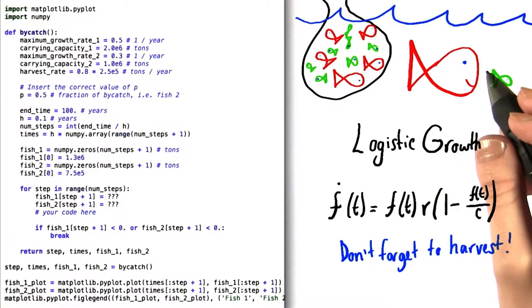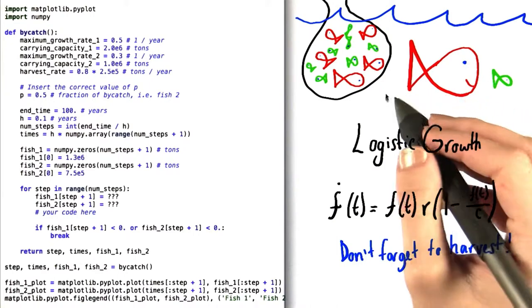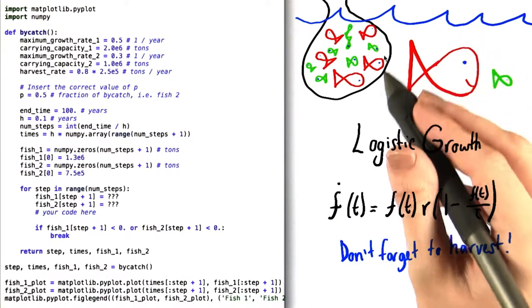Welcome to the first problem of unit 4. In this situation, we're going to pretend that we are fishermen, and we're interested in catching this red type of fish right here.